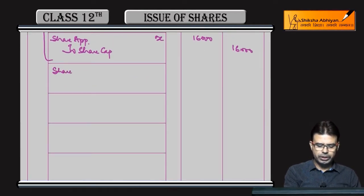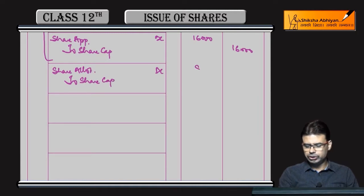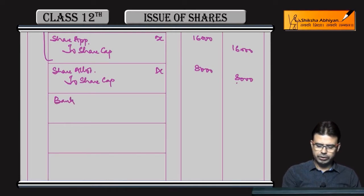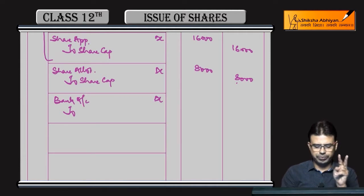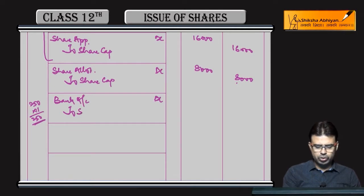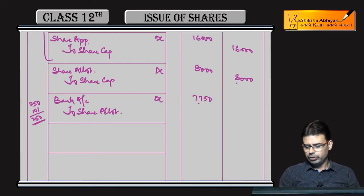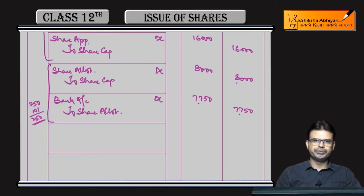Uske baad, allotment kiya — 1 rupee per share bacho. Share Allotment debit to Share Capital: 8,000 shares × 1 rupee = 8,000 rupees. Ab dekhte hain kisne paise receive nahi hua. Jo 250 shares hain, un par sirf 2 rupees aaya hai — matlab sirf application aaya hai. To un 250 shares par 1 rupee ki allotment — 250 rupees hamein receive nahi hue. 8,000 mein se 250 receive nahi, balance 7,750 rupees receive ho gaye.